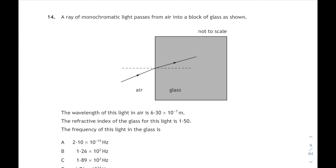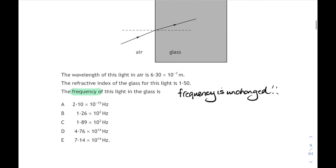Question 14 is a ray of light passing from air into glass. We don't know any angles but it's bending towards the normal. We're told the wavelength of light in air is 6.3 times 10 to the minus 7 and the refractive index is 1.5. We're asked what's the frequency of the light in the glass. Well, frequency doesn't change, so we can work out the frequency using the speed of light in air and the wavelength of light in air. 3 times 10 to the 8 divided by 6.3 times 10 to the minus 7, that's 630 nanometers, gives us an answer of 4.76 times 10 to the 14 hertz. That corresponds to answer D.